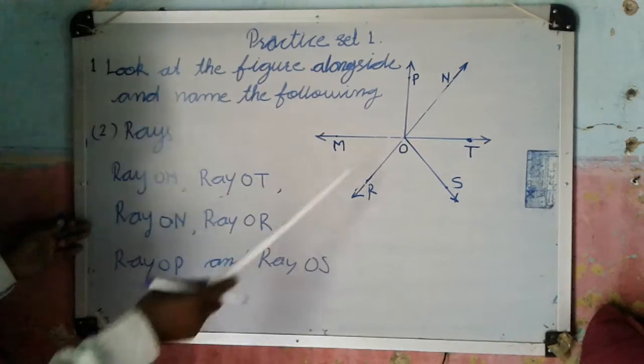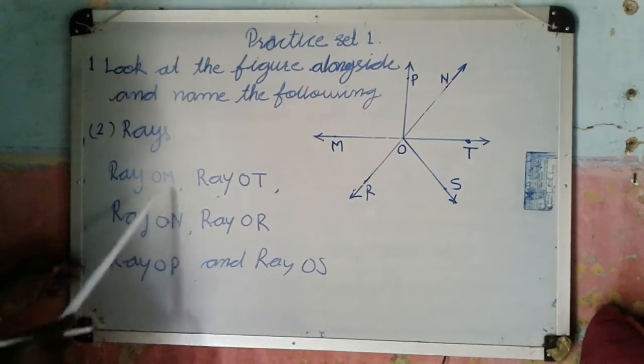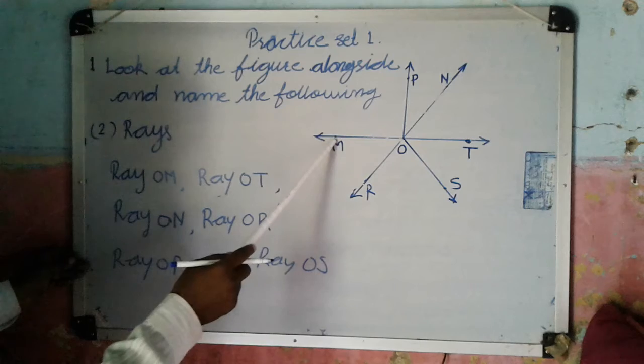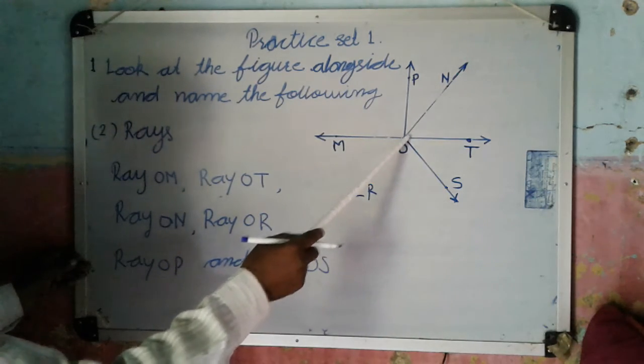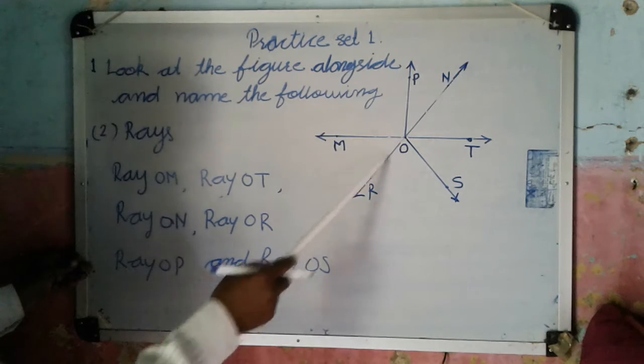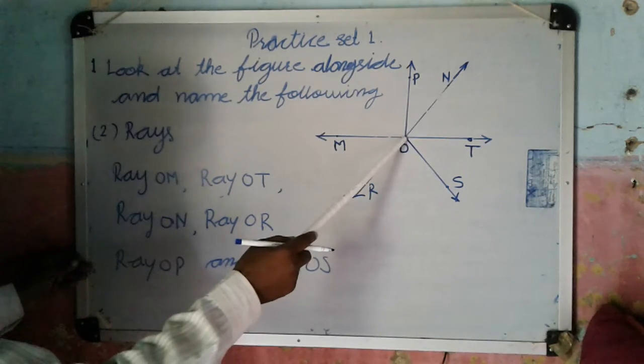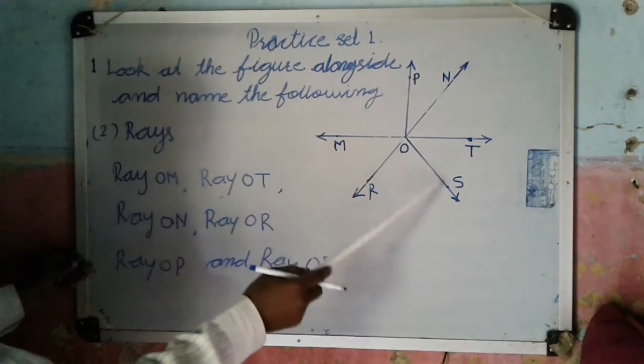These are all rays we can see in this figure: ray OM, ray OP, ray ON, ray OR, ray OP, ray OS.